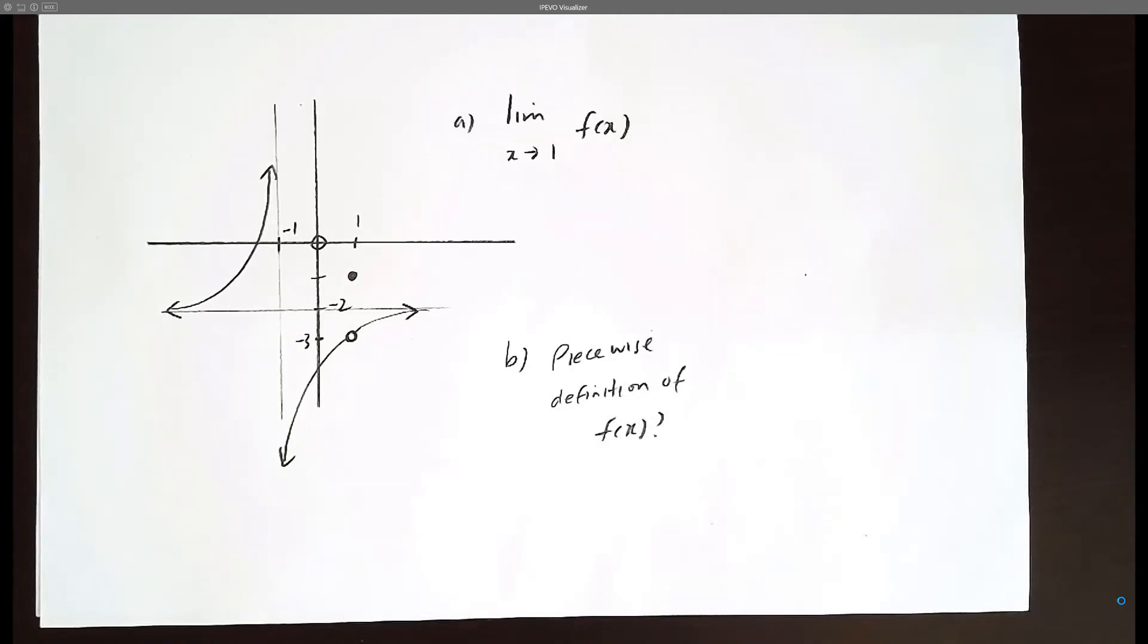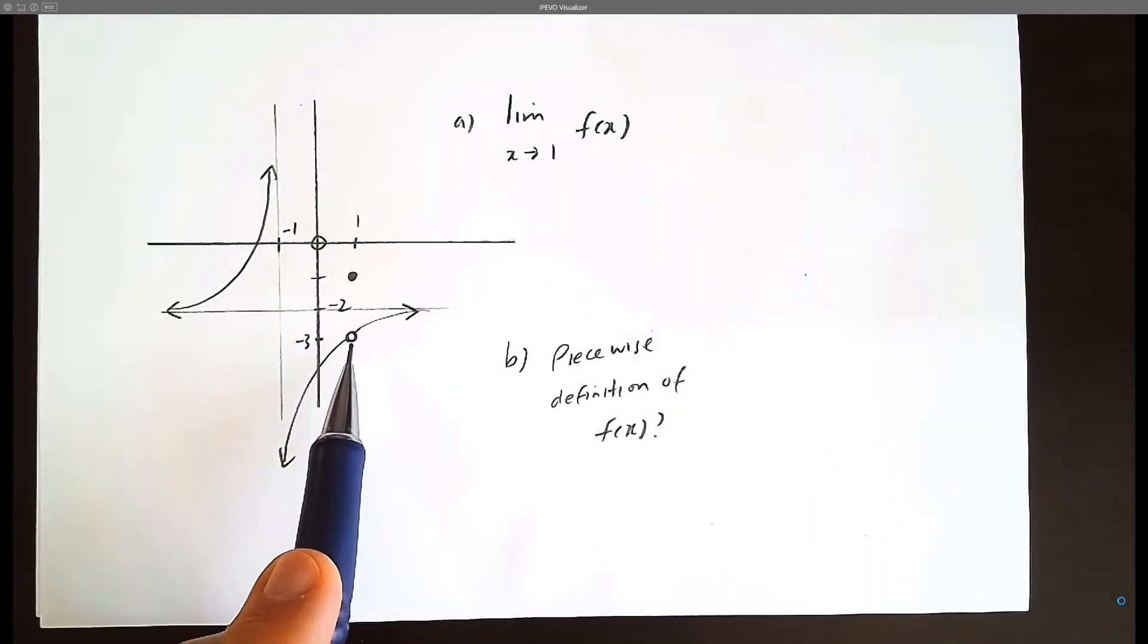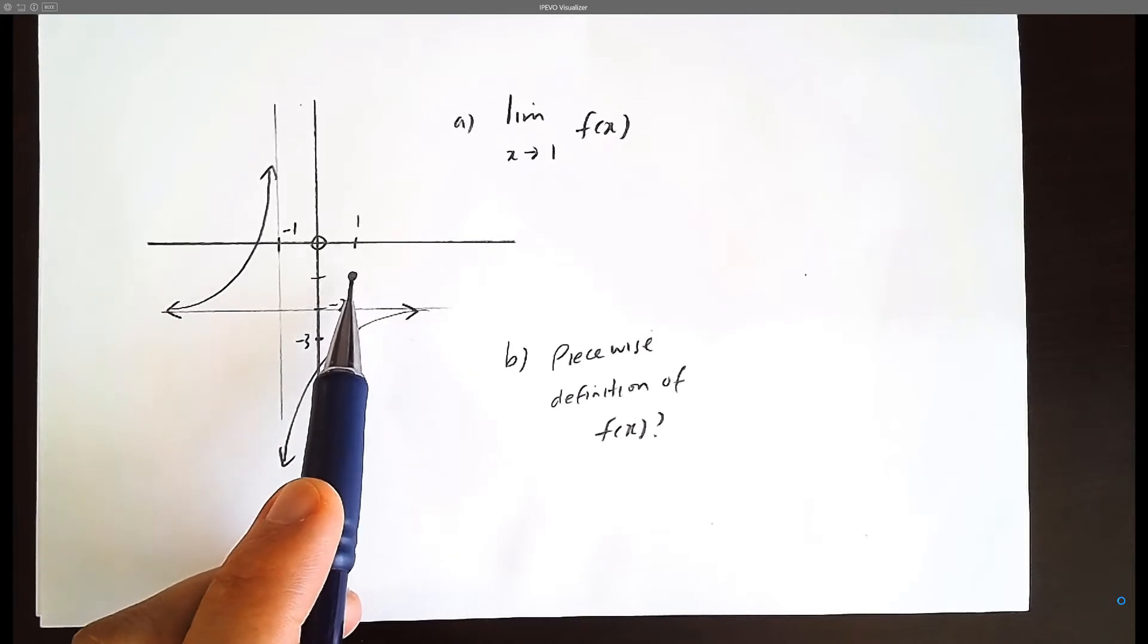So let's practice this limit question involving x approaching 1. We're approaching a hole, but what's interesting about this question is we have another hole that's kind of filled in above it.